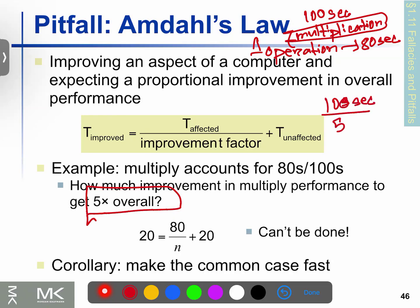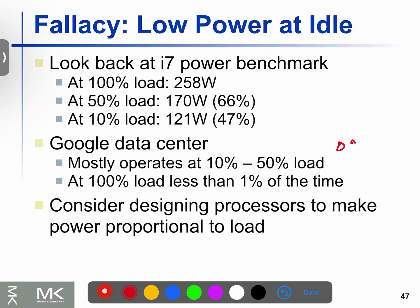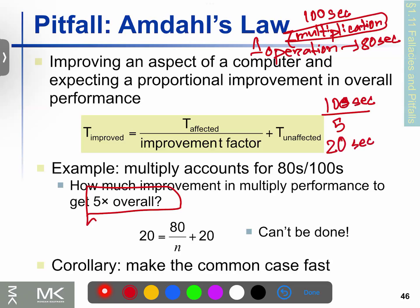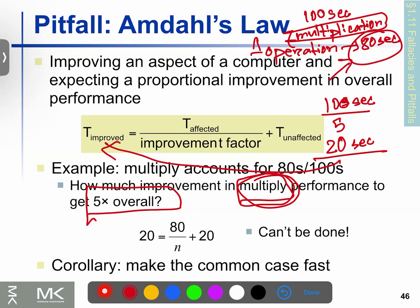The total execution time is 100 seconds. The affected part (multiplication) is 80 seconds, and the unaffected part is 20 seconds. After applying a 5x speedup to the 80-second portion, the improved execution time for that part becomes 16 seconds, giving a total conversion of approximately 20 seconds.